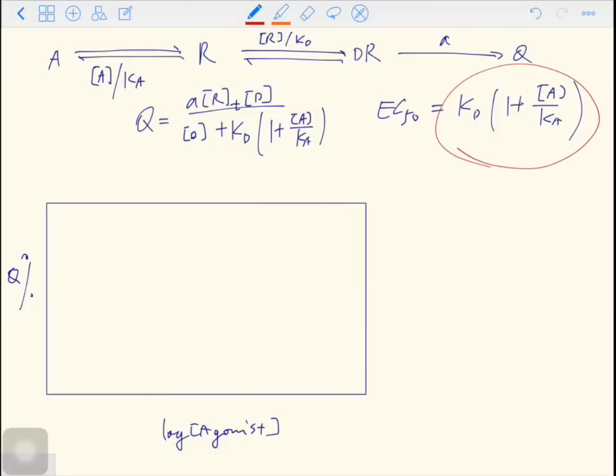In the absence of the antagonist, we can draw a rectangular hyperbola like this, and this is when A is 0. And if you have an EC50, you have log EC50. From this EC50, you can calculate the dose you need to achieve 50% of the maximal response.